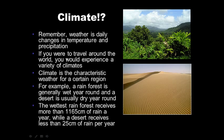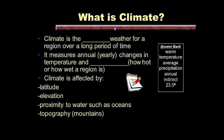Remember, weather is daily changes in temperature and precipitation. If you were to travel around the world, you would experience a variety of climates. Climate is the characteristic weather for a certain region. A rainforest is generally wet year-round, while a desert is usually dry. The wettest rainforest receives more than 1,165 centimeters of rain a year, while a desert receives less than 25 centimeters per year.